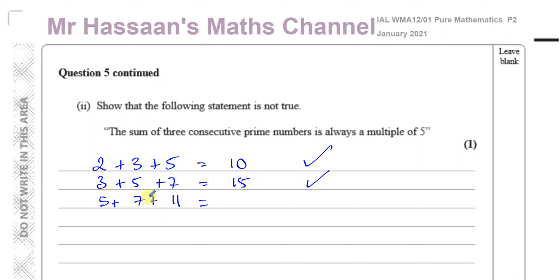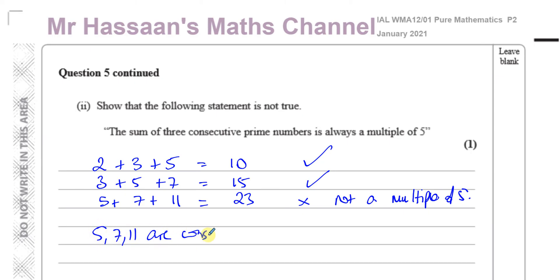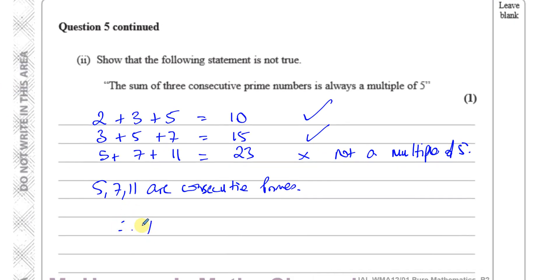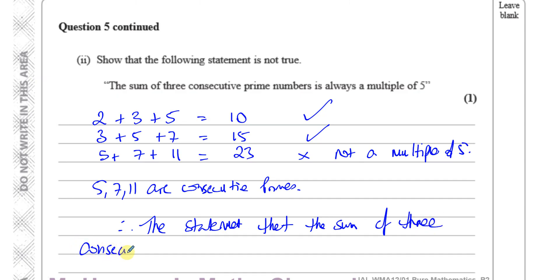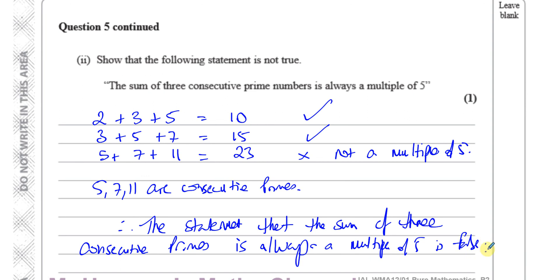Let's try the next set: 5 + 7 + 11 = 23. That is not a multiple of five. And 5, 7, and 11 are consecutive primes. Therefore the statement that 'the sum of three consecutive prime numbers is always a multiple of five' is false.